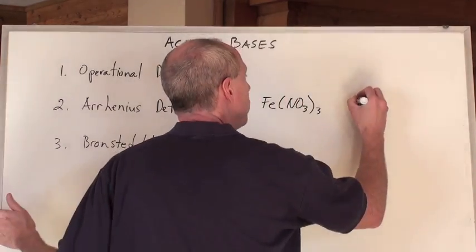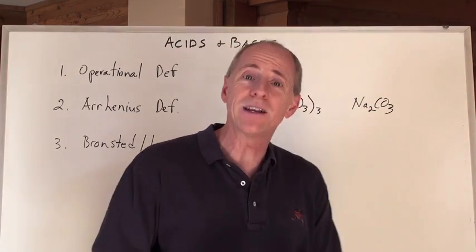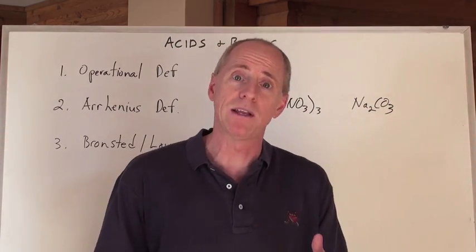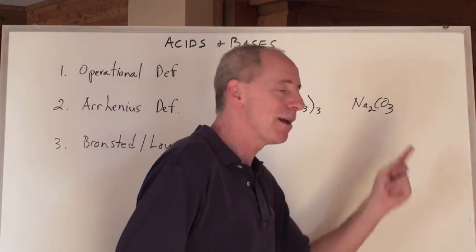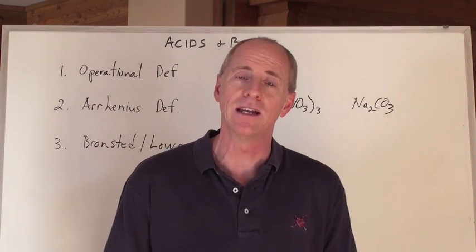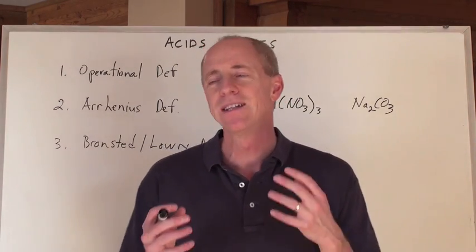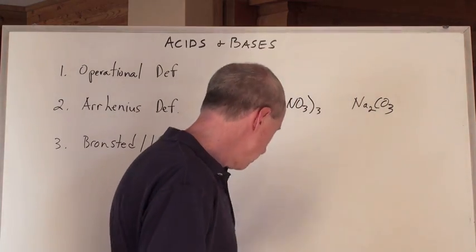And then sodium carbonate, Na2CO3, is a base. It's actually a weak base, but it's kind of a strong weak base. We'll talk about that. But the idea is that this chemical, being a base, doesn't have OH-negative in it. So Arrhenius' definition doesn't really work conceptually very well for those types of chemicals.